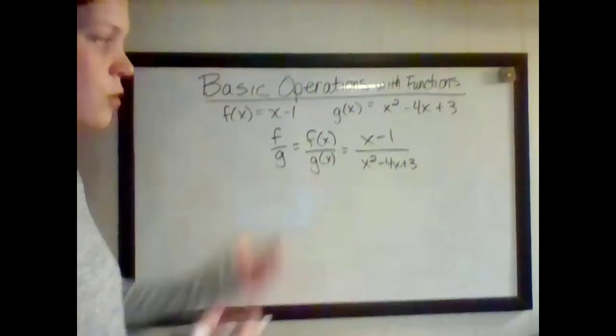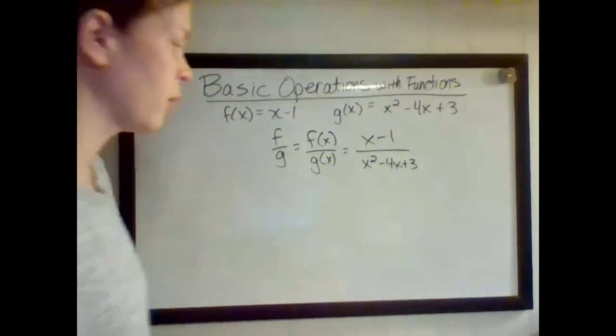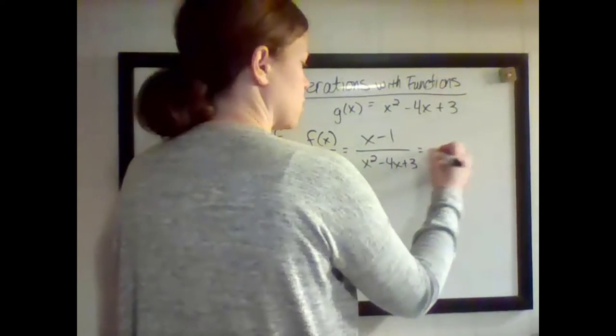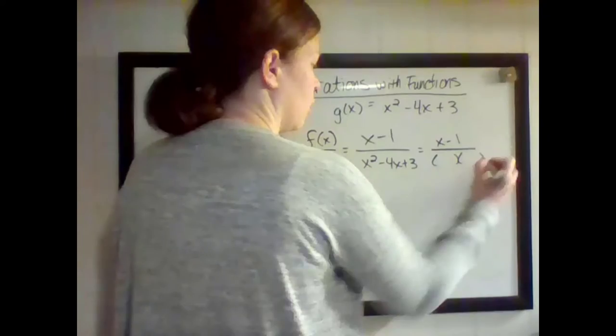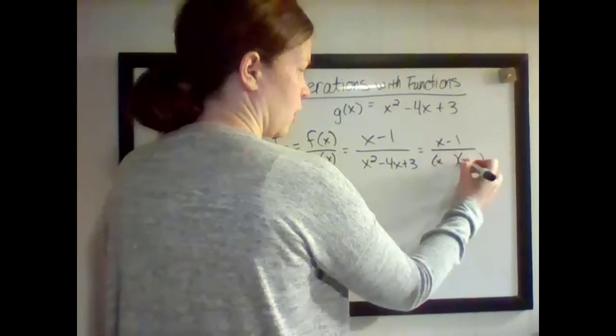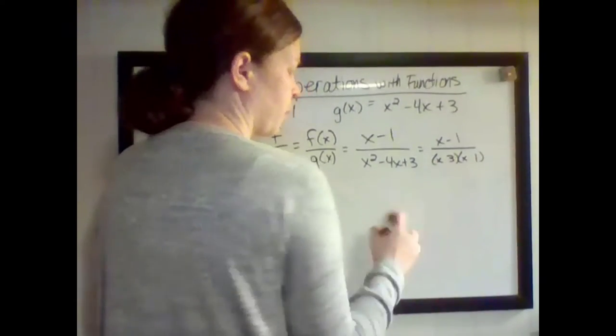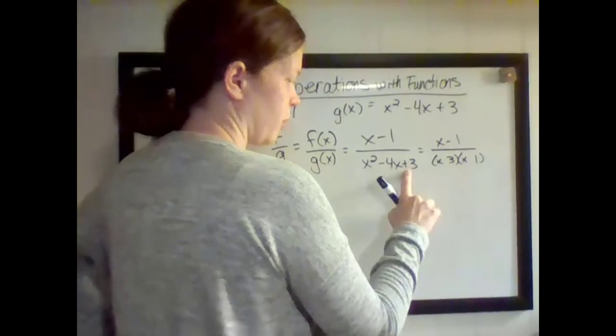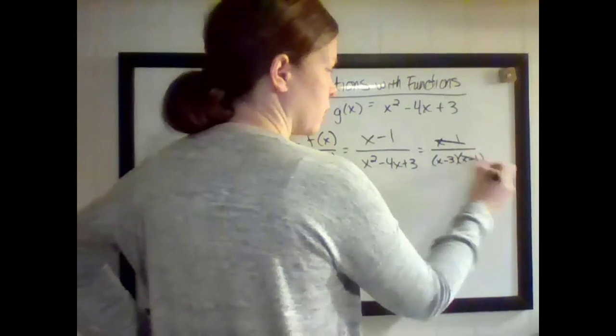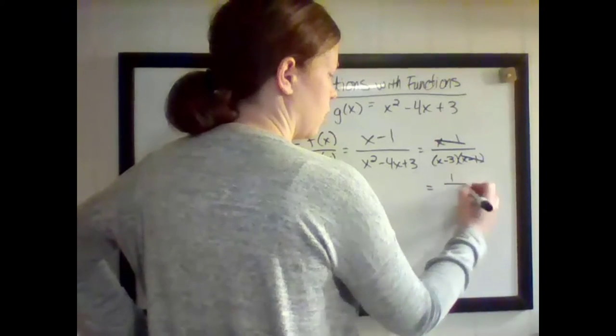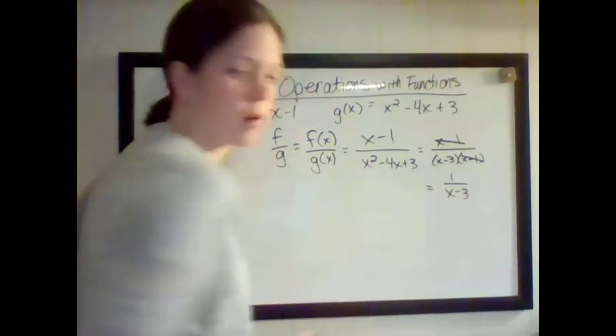So this would be my answer unless I can simplify. Let's see, on the bottom, factoring gives me (x - 3)(x - 1). With this being a plus and this being minus, they're both going to be minus. So x - 1 will cancel, and I'll be left with 1/(x - 3).